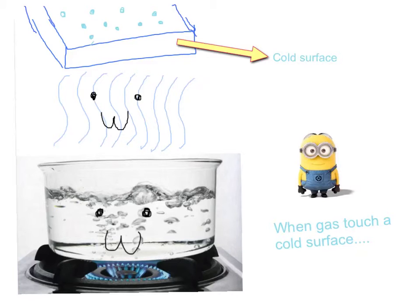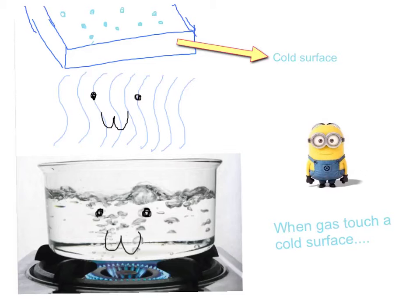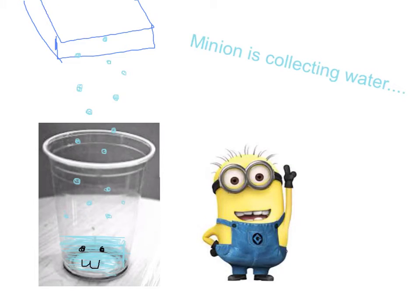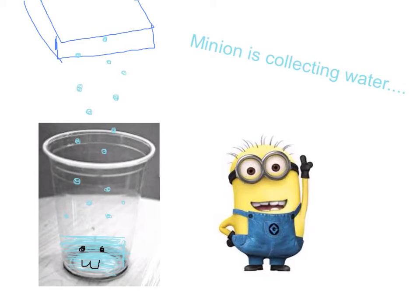When the molecules in the gas phase touch the cold surface, they start moving slower and slower, and they get closer to each other. Back to water now! Yes, I just went through a phase called condensation. Minion is collecting April to transform her back into liquid.